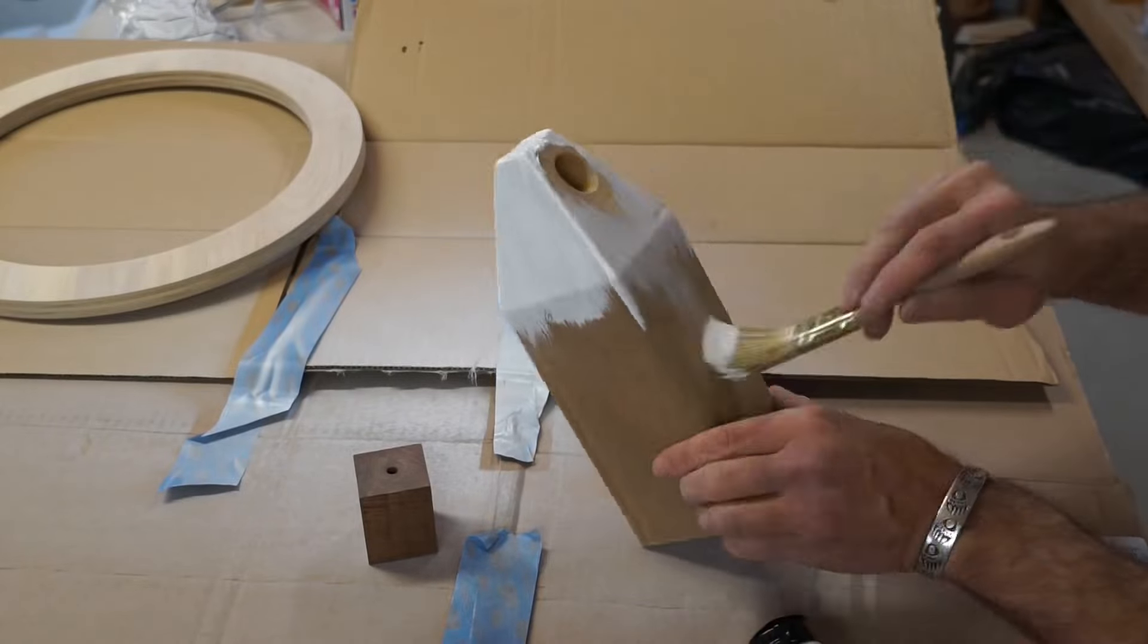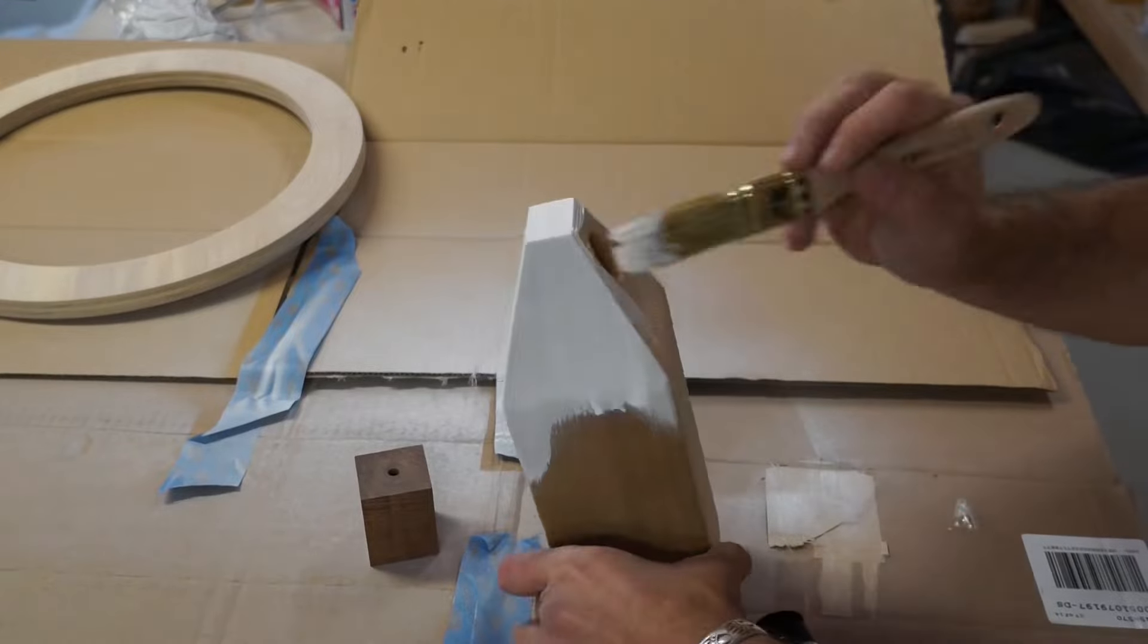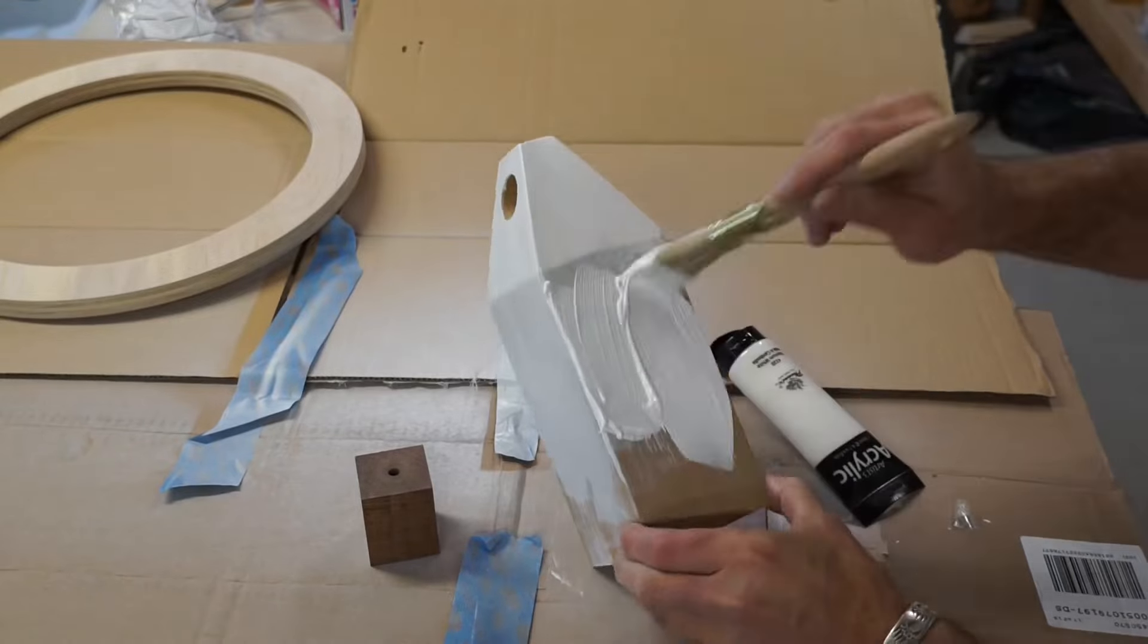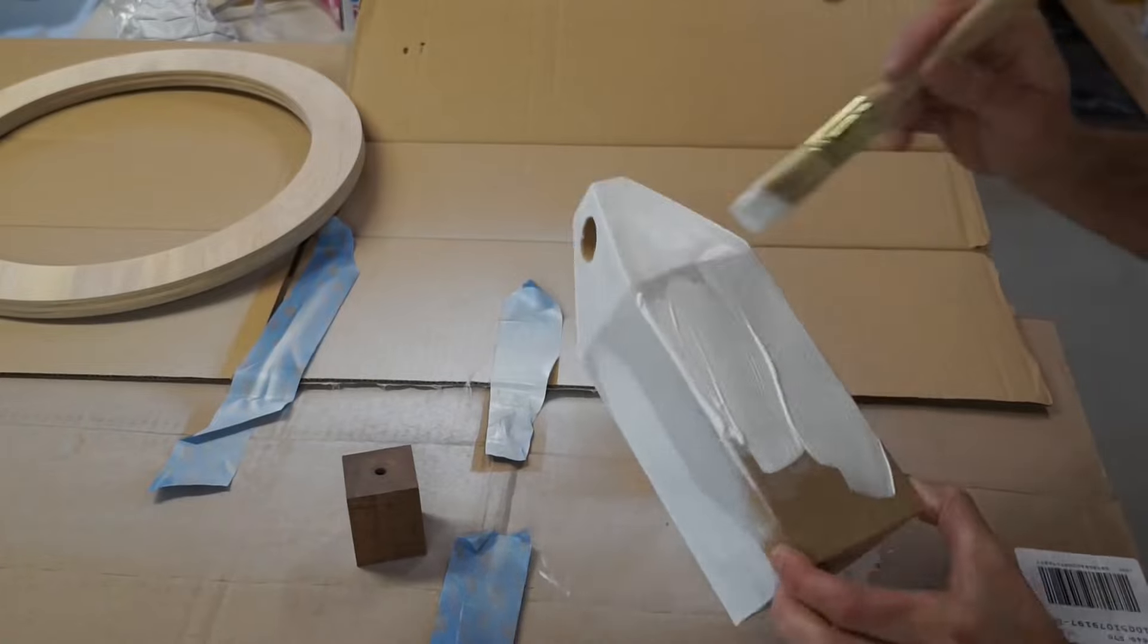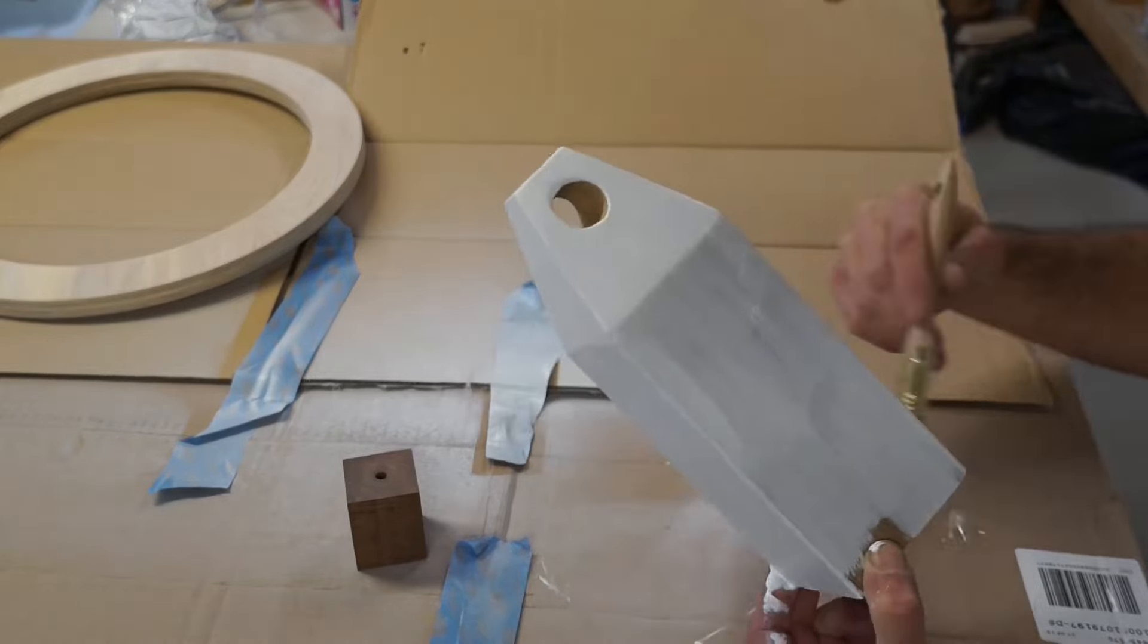Now comes my least favorite part of this project, which is painting. I just don't like to paint, but you're going to paint this. Whatever color you choose here is going to be your base. So when you sand off the paint in the sanding stage, you're going to sand down to this layer. So I chose white, and it's fine.